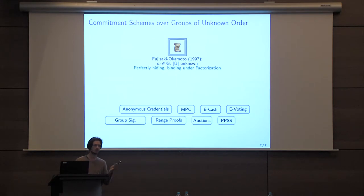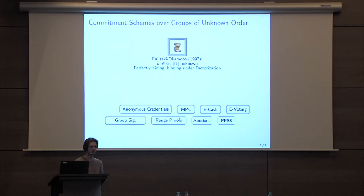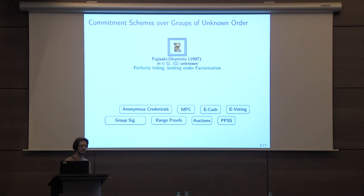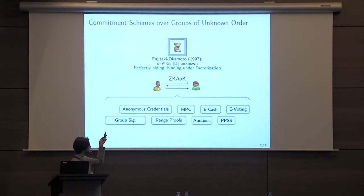For example, if you want to consider a statement like proving that some commitment commits to a value bigger than 10 — this is a non-algebraic statement, so it's not easy or efficient to do with standard commitments over prime order groups. But if you can directly commit to an integer, it becomes much easier to handle. In fact, those applications I listed are mostly based on a zero-knowledge argument of knowledge of an opening to this commitment.